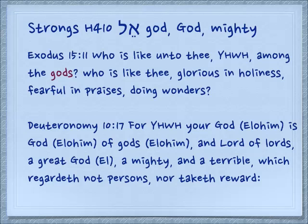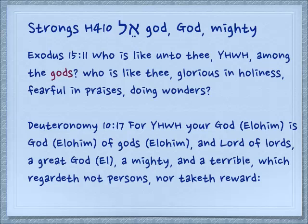For example, Exodus 15:11 — 'Who is like unto thee, Yehovah, among the gods? Who is like thee, glorious in holiness, fearful in praises, doing wonders?' Now you are familiar with the term Elohim, no doubt — it comes from this root also. And sometimes they're even used in the same sentence. Deuteronomy 10:17 — 'For Yehovah your God, Elohim, is a God, Elohim of gods, also Elohim of the small-g gods, a Lord of Lords, a great God, our God.' And there it uses just the word El — 'a mighty and terrible, which regardeth not persons, nor taketh reward.'